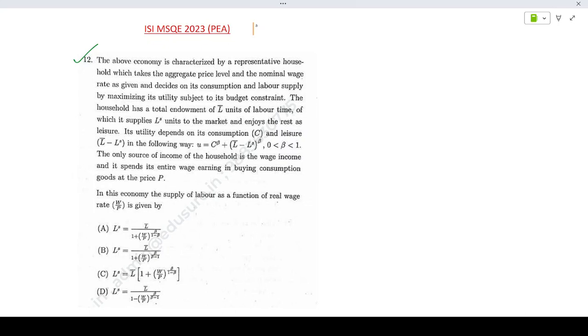The above economy is characterized by a representative household which takes the aggregate price level and nominal wage rate as given and decides on its consumption and labor supply by maximizing utility subject to its budget constraint. The household has a total endowment of L bar units of labor time which it supplies for LS units to the market and enjoys the rest as leisure.